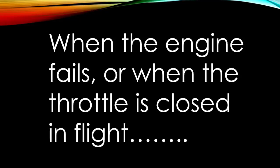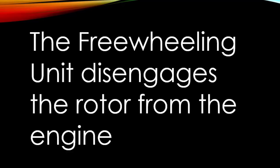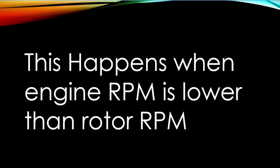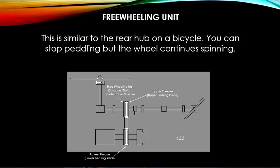The freewheeling unit, located in the upper sheave, disengages the rotor from the engine when the engine fails or when the throttle is closed in flight. It happens as soon as the engine RPM gets lower than the rotor RPM. Think of it like the rear hub of a bicycle — you can stop pedaling, but the bicycle keeps moving.